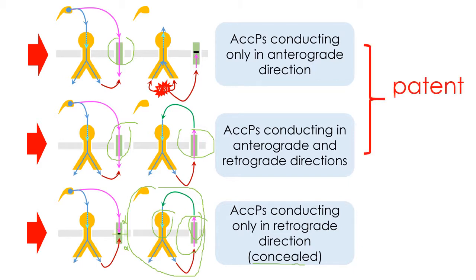Accessory pathways that conduct in the anterograde direction may result in ventricular pre-excitation during sinus rhythm, in which case these accessory pathways are called patent.